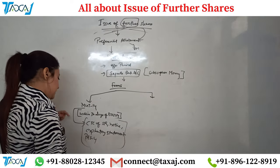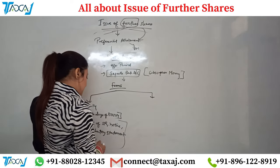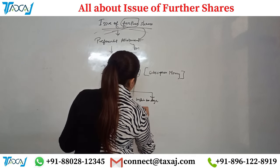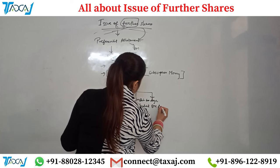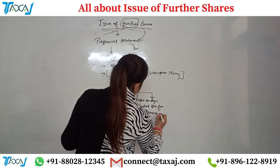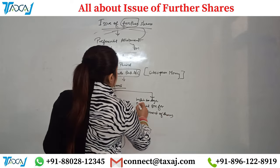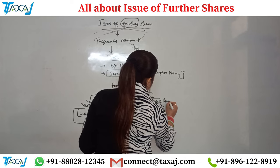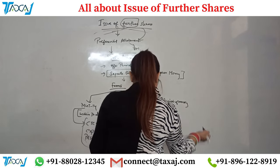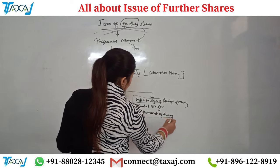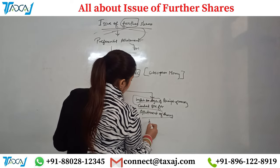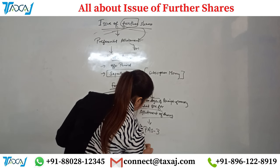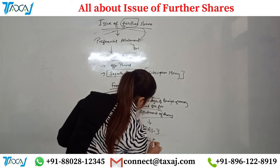After MGT-14, once the money is received, a board meeting must be conducted within 60 days for the allotment of shares — because at this stage shares have only been subscribed, not yet allotted. Within 60 days of receipt of money, you must allot the shares. After the money is received and shares are allotted in the board meeting, Form PAS-3 is filed within 15 days of allotment.